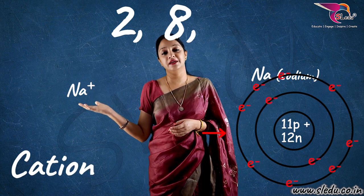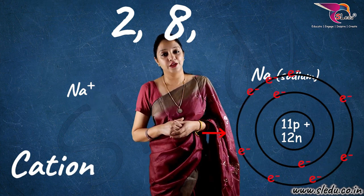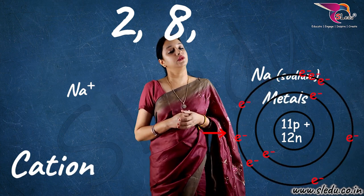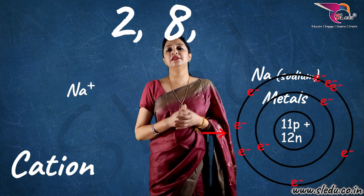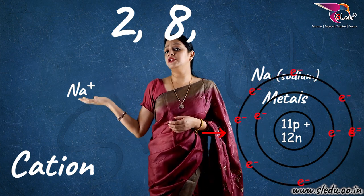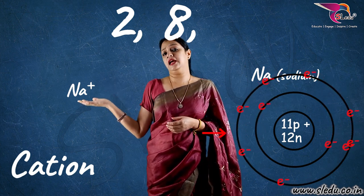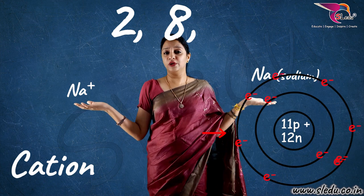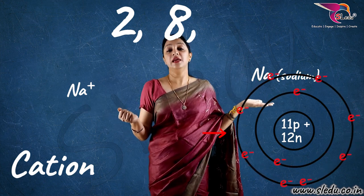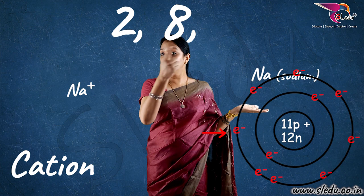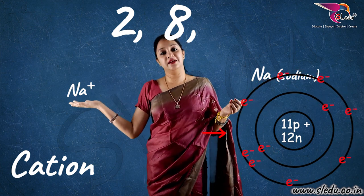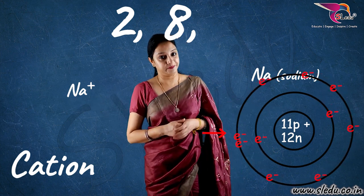Yes, you are right. It becomes your cation. So, sodium being a metal — metals have the tendency to easily lose electrons to form a positive charge, cations. So, sodium, as you can see on this side, is Na. It lost its one electron, and became the cation Na positive.